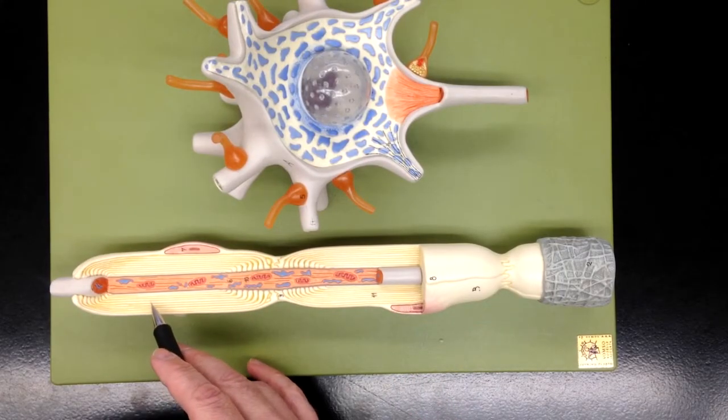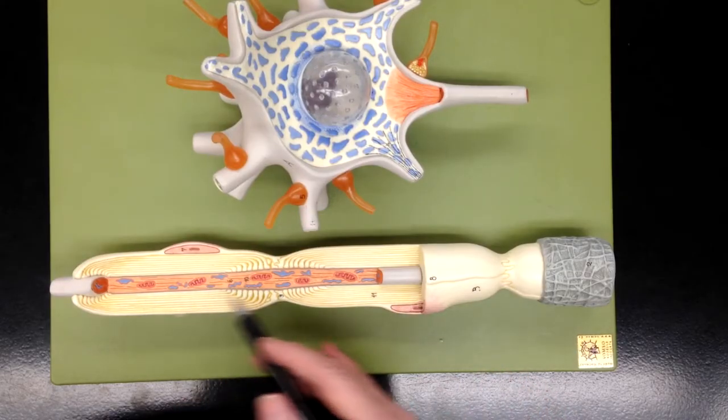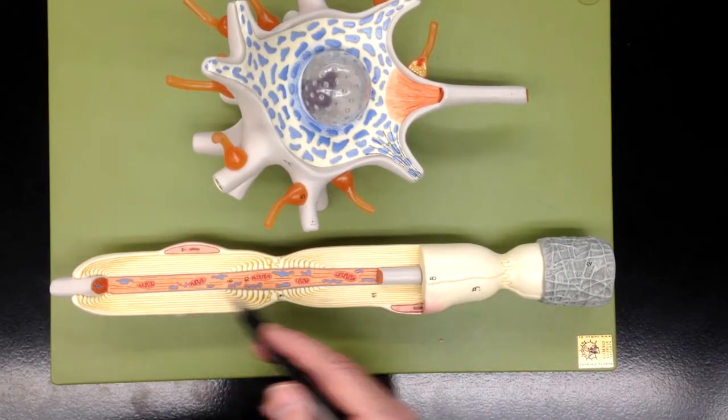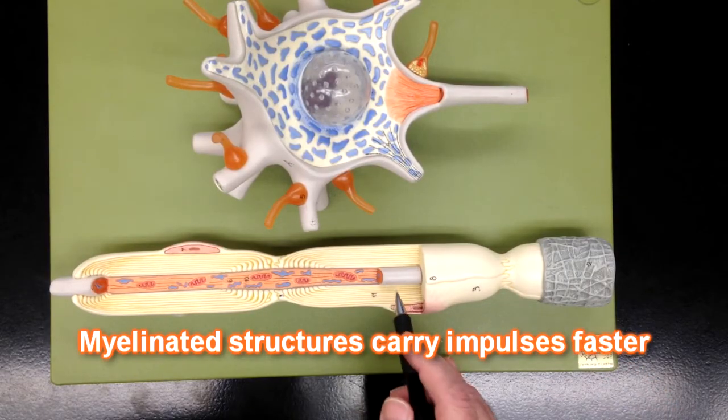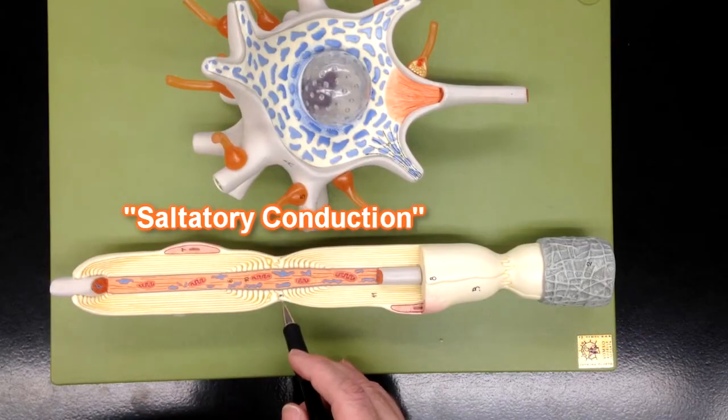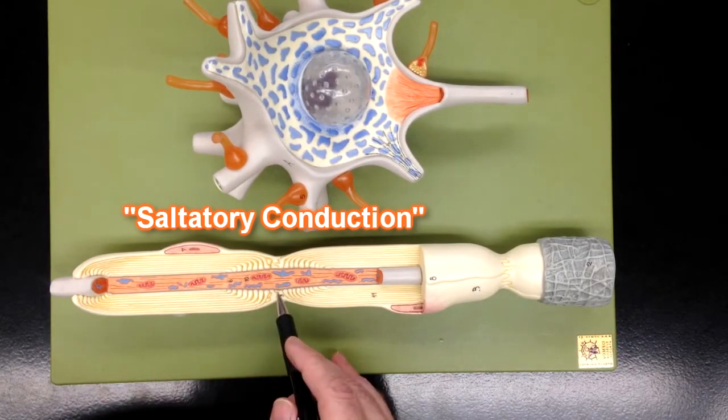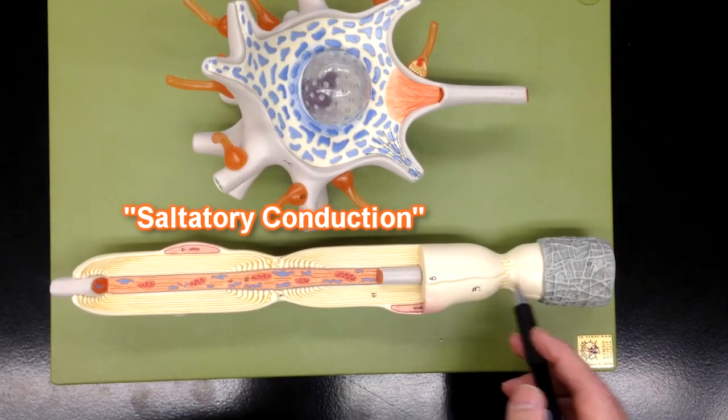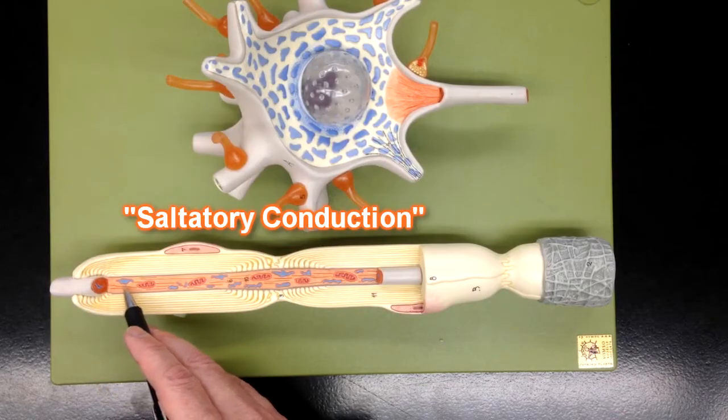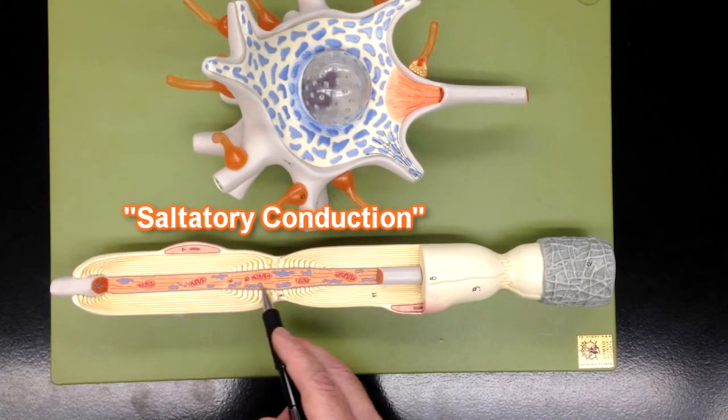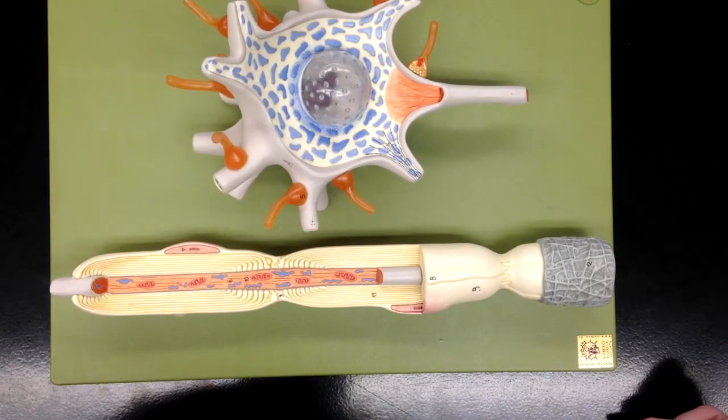These Schwann cells with the myelin speed up the electrical impulse as it's carried down the axon. They do this through saltatory conduction, where the action potential jumps from node of Ranvier to node of Ranvier, so it doesn't have to cover all this space. That's what speeds up the electrical transmission.